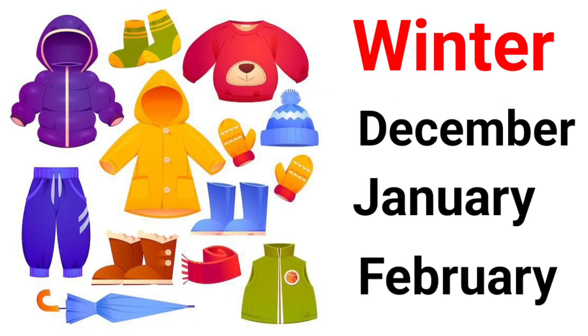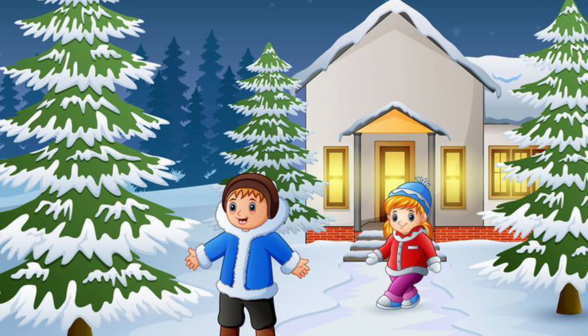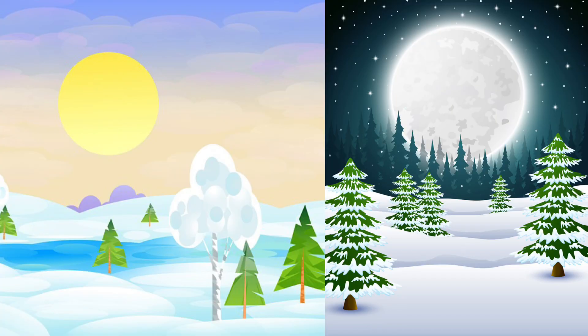Now we will see the season of Winter. Winter season comes in the month of December, January, February. Winter comes after Autumn and before Spring. Winter is the coldest season of the year. In Winter, the days are short and the nights are long. The winds blowing in Winter are fast, very cold and chilly.